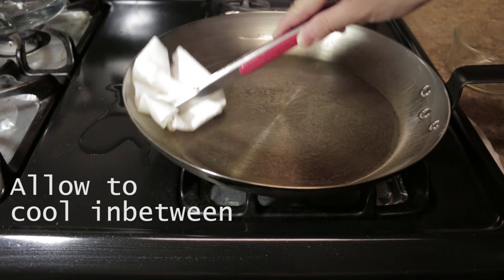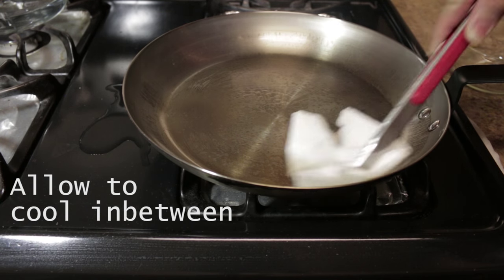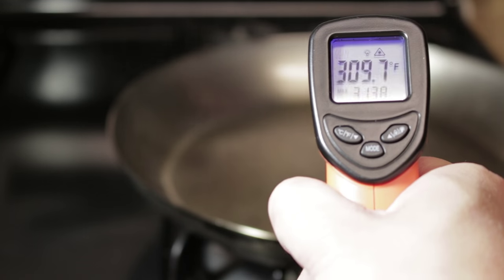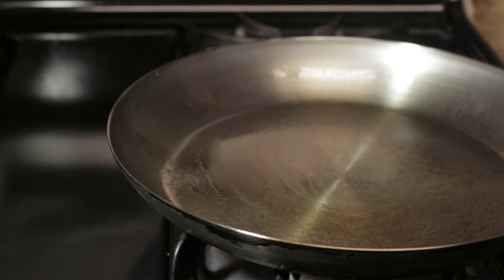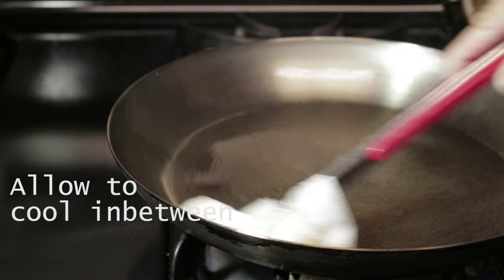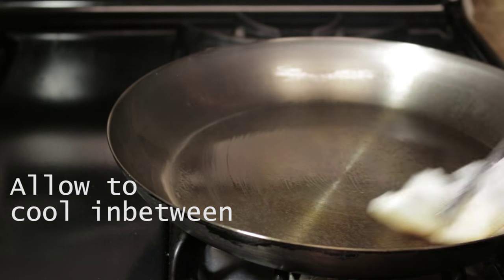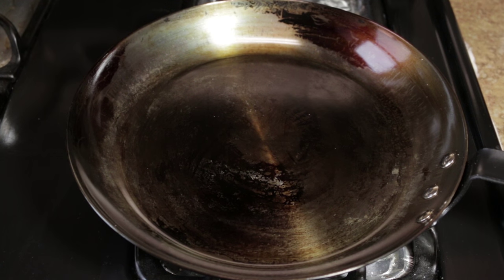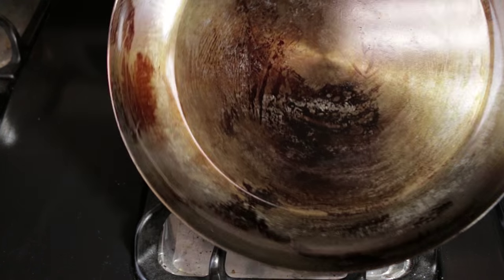You can see from the first round, it's starting to change into that bronze color. Just heat up the pan near the smoking point. Apply the oil and wipe. This is roughly about five times. It starts to turn into this color.